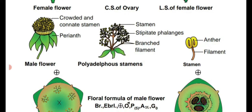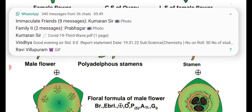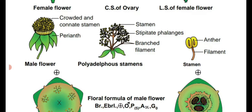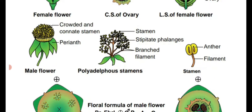See the male flower: many stamens are present — more than a thousand — it looks like a crowded form with connate stamens. The filaments are divided into five branches with a small stalk-like portion known as stipitate phalanges. At the tip they have the stamen. The structure of the stamen: a long filament with a dithecous anther at the tip. The stamens which have a number of branches are known as polyadelphous condition — meaning more than one bundle of stamens is known as polyadelphous stamens.